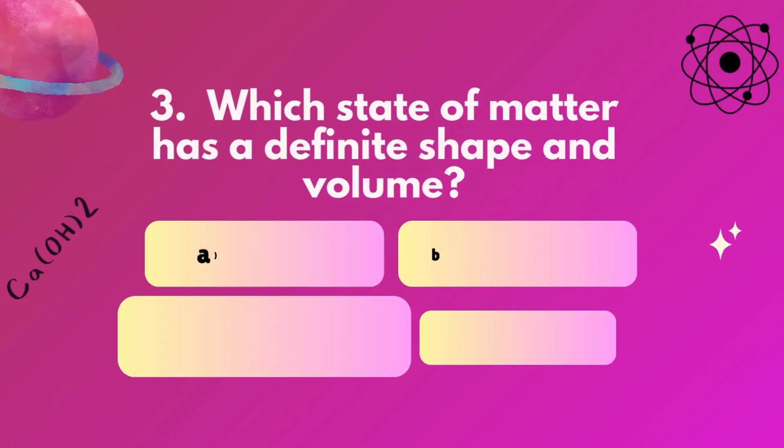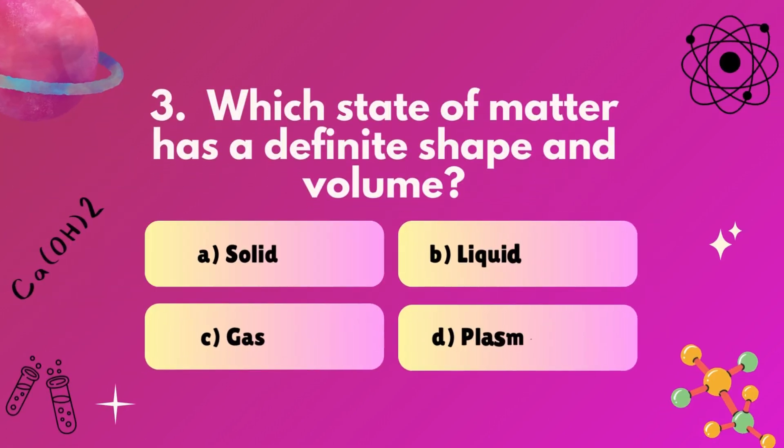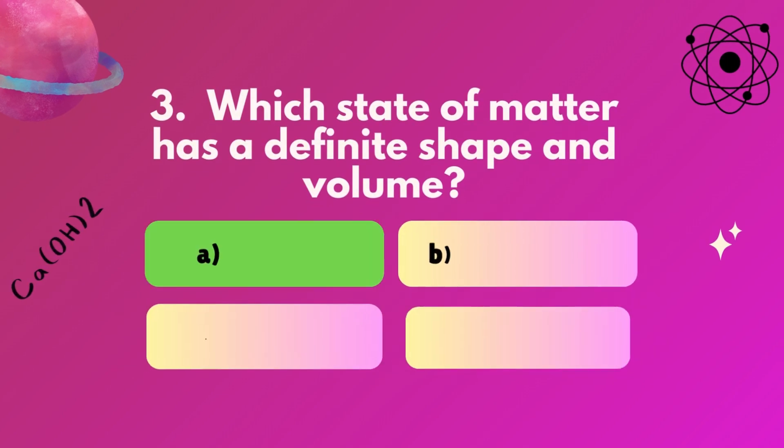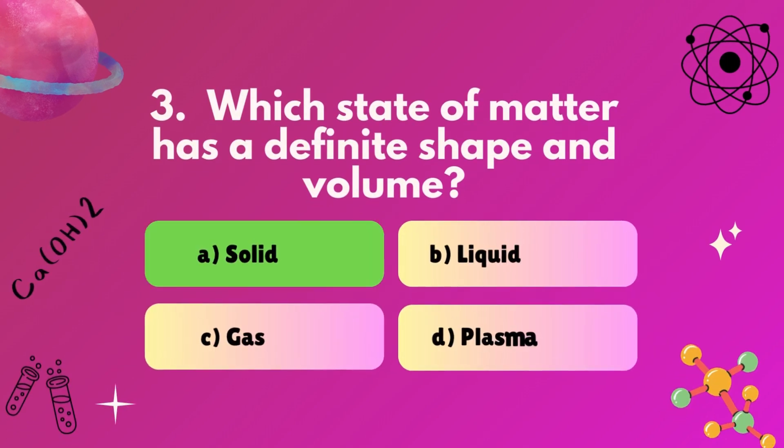Question 3: Which state of matter has a definite shape and volume? A, solid. B, liquid. C, gas. D, plasma. Correct answer is A, solid.